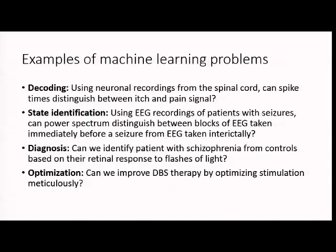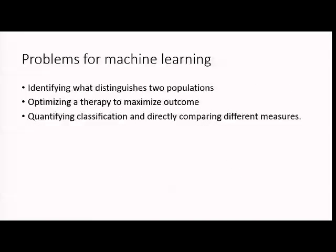I've used machine learning a lot in this field, like the Kaggle competition for seizure prediction. We use it for decoding, like recording from neurons in spinal cord and asking can we detect when that neuron is giving information about speech or pain. We use it for state identification, like identifying patients in a pre-seizure state versus interictal. We use it for diagnosis, like can we see differences in EEG patterns in patients that are on drugs or off drugs. And then optimization, can we use machine learning to help improve therapeutic outcomes.